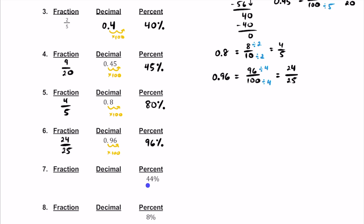For number 7, we have 44%. So where is the decimal currently? This decimal is currently at the end, after that 4. If we want to make it a decimal, let's divide by 100 — so let's move the decimal twice to the left.